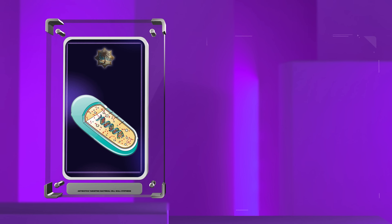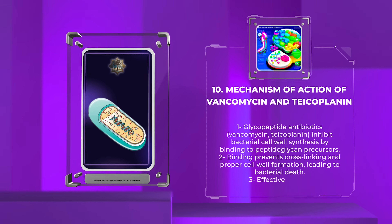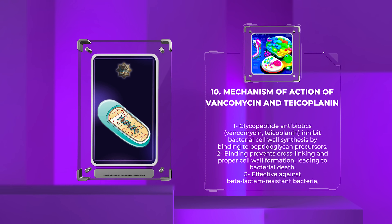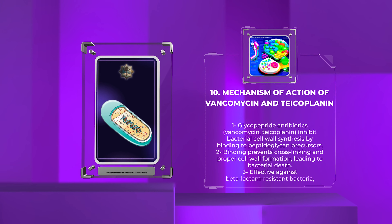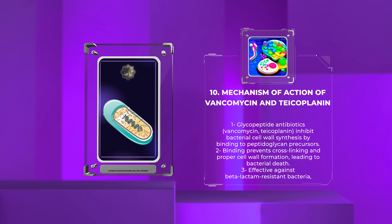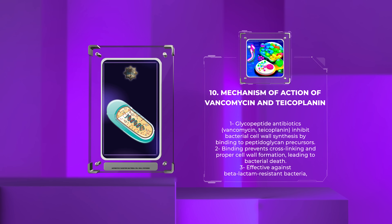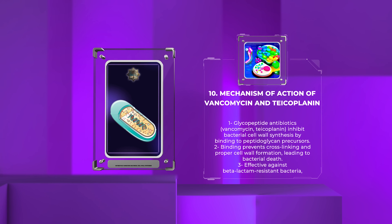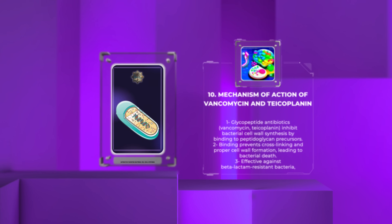Vancomycin and teicoplanin are examples of glycopeptide antibiotics that inhibit bacterial cell wall synthesis by binding to the terminal D-Ala-D-Ala dipeptide residues of peptidoglycan precursors. This prevents cross-linking and proper cell wall formation, leading to bacterial death. Their mechanism of action is distinct from beta-lactam antibiotics, making them effective against beta-lactam-resistant bacteria, including MRSA.